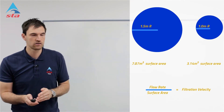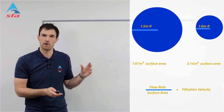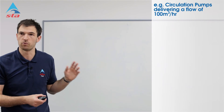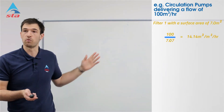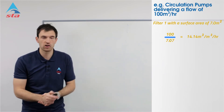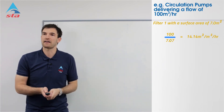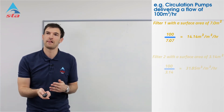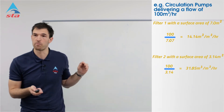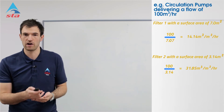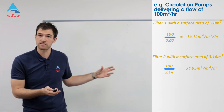Speed is key — the slower the better. Let's take a worked example. Our circulation pumps deliver 100 cubic metres of water per hour — that's the flow rate coming through the pipework. Entering filter one, which has a surface area of 7.07 m²: 100 ÷ 7.07 gives us 14.14 m³/m²/hr — that's the velocity, the speed. Taking filter two with a surface area of 3.14 m², putting that into exactly the same equation gives us 31.85 m³/m²/hr. So that's going a lot faster than the other filter.